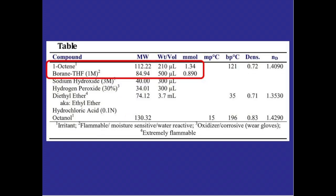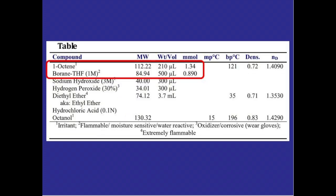So if we look at the table initially we might assume that the borane THF complexes are limiting reagent because it has a smaller amount of millimoles but we have to remember that the one octene is actually used up three times as quickly and so that'll be our limiting reagent in this reaction.